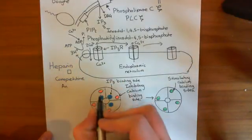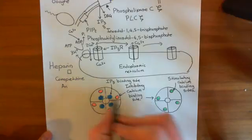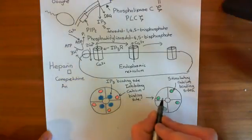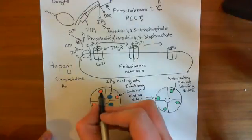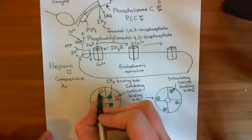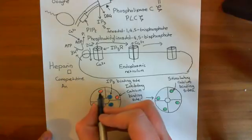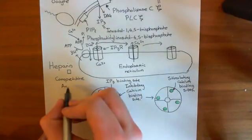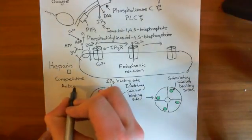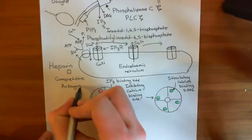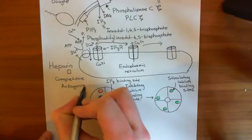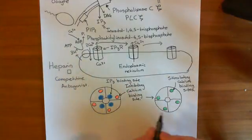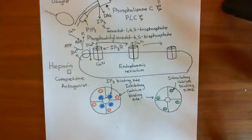Heparin does not change the conformation of the receptor. So the inhibitory calcium binding site will still remain, and the stimulatory calcium binding site will not be exposed — it's going to block IP3 from being able to bind and change the conformation.